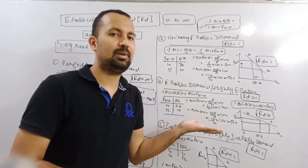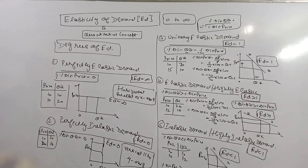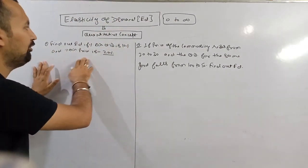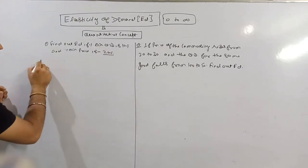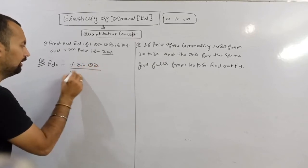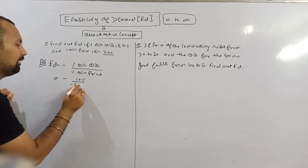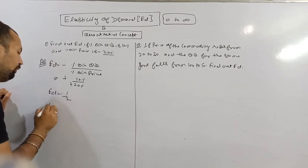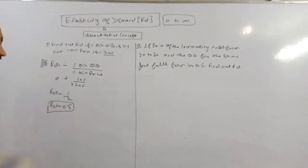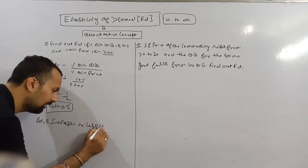Now we start with numerical exercises — how to solve questions and denote answers by type. First question: find the elasticity of demand if percentage change in quantity demanded is 10% and percentage change in price is minus 20%. Using the formula Ed equals minus percentage change in quantity upon percentage change in price: Ed equals minus 10 upon minus 20, which gives plus 10 upon 20, that is 1 upon 2, so Ed equals 0.5. Since the answer is less than 1, the elasticity of demand is inelastic or less than unitary elastic.